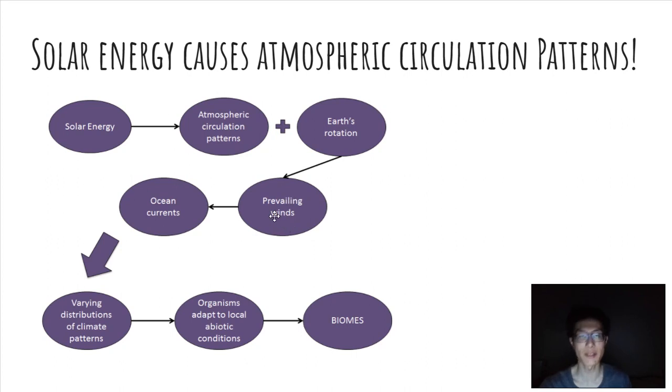The prevailing winds ultimately cause ocean currents which then drive variations in distributions of climate, which then drives organisms to adapt to those local abiotic conditions and that's what causes our biomes. But here we're really focusing on circulation patterns and prevailing winds, which for some reason is a topic that gets a lot of people.